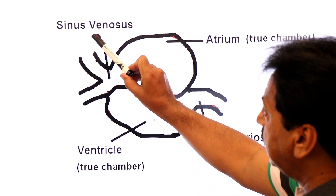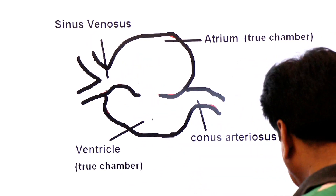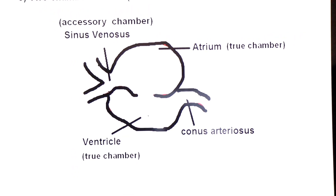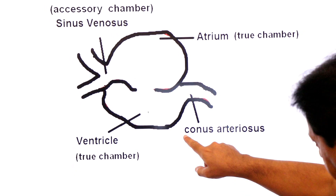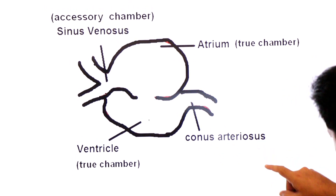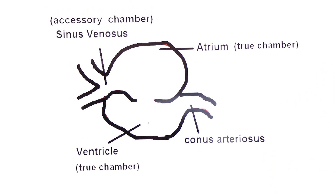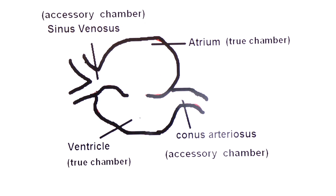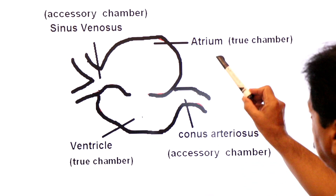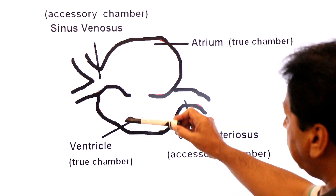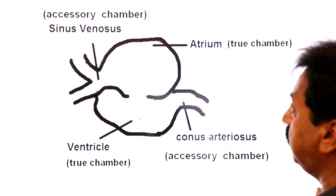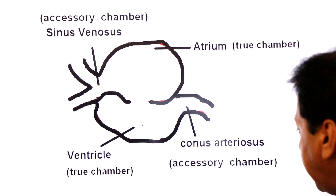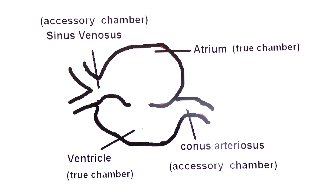There are also two accessory chambers: the sinus venosus and the conus arteriosus. These two are helper chambers — accessory means helper.